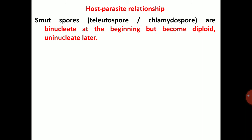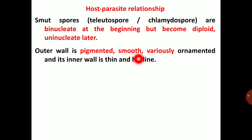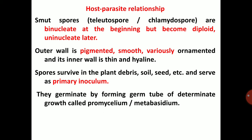Host-parasite relationship. Smut spores — that is teliospores or chlamydospores — are binucleate at the beginning but become diploid uninucleate later. The inner wall is thin and hyaline; the outer wall is pigmented and variously ornamented. Spores survive in plant debris, soil, and seed, and serve as primary inoculum. Seed, soil, and plant debris all act as primary inoculum for smut fungi.